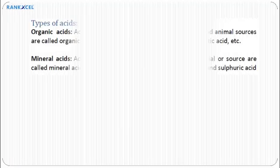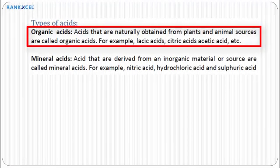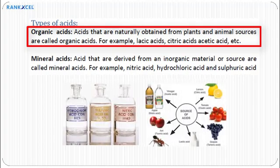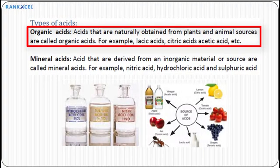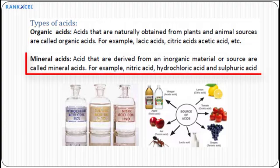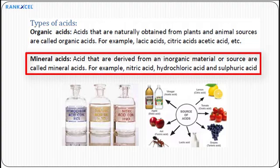Types of acids: Organic acids are acids that are naturally obtained from plants and animal sources. For example, lactic acid, citric acid, acetic acid, etc. Mineral acids are acids that are derived from an inorganic material or source.